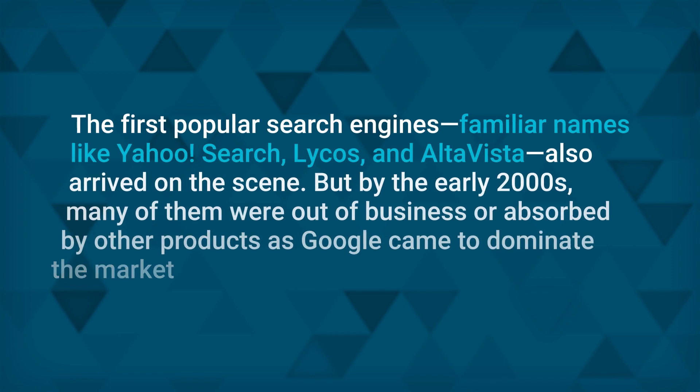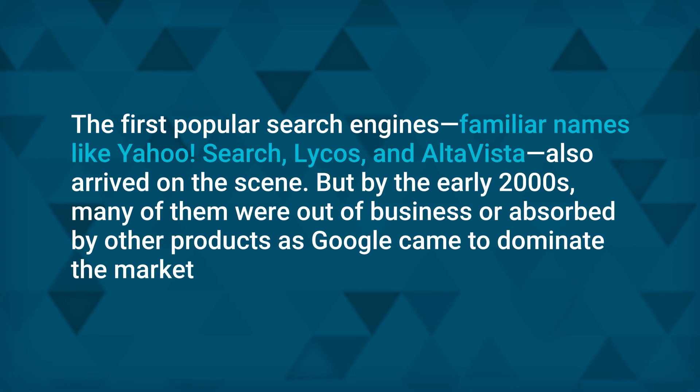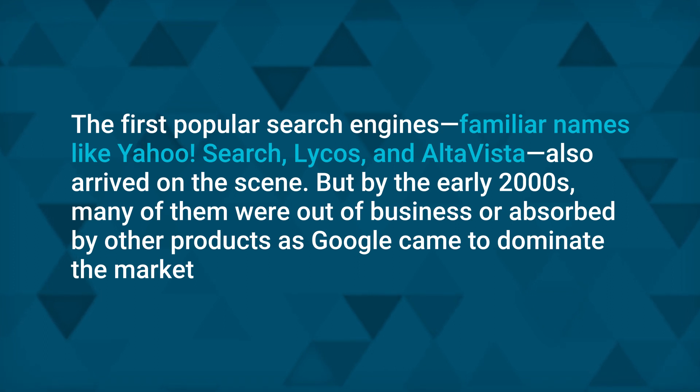The first popular search engines — familiar names like Yahoo Search, Lycos, and AltaVista — also arrived on the scene. But by the early 2000s, many of them were out of business or absorbed by other products as Google came to dominate the market. Around the year 2000, experts started to promote the idea of an upgraded Web that would be more interactive, with new features like blogs, social networks, and apps that users could manipulate. They called it Web 2.0.